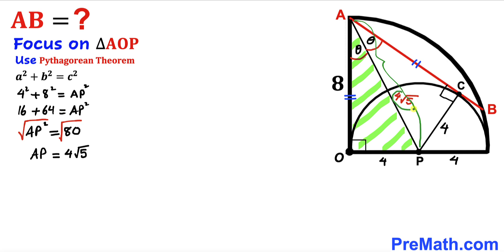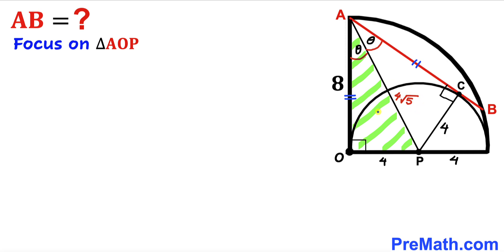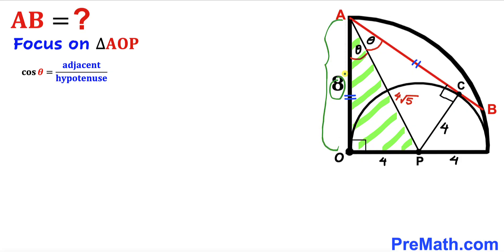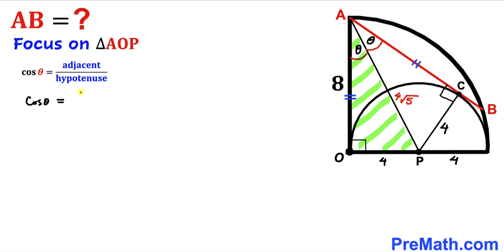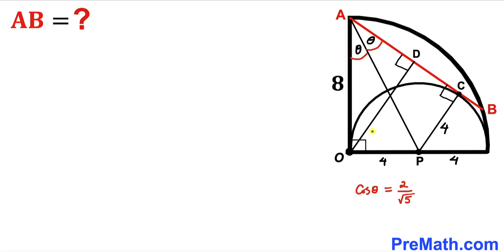Focusing again on triangle AOP, we recall the cosine ratio. Cosine of theta equals the adjacent side divided by the hypotenuse, so cosine theta = 8 / (4√5). Simplifying the right-hand side, cosine theta = 2 / √5.